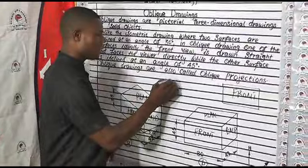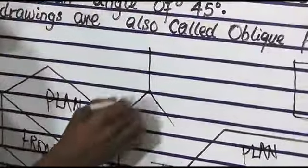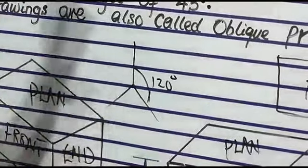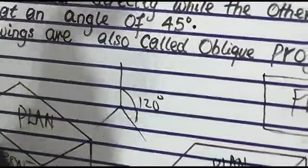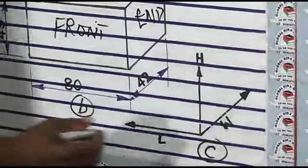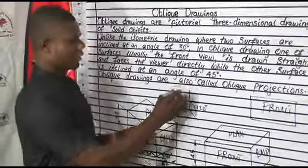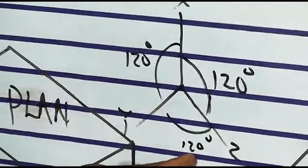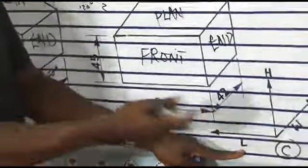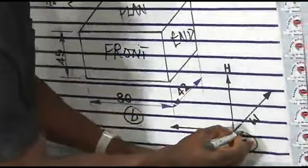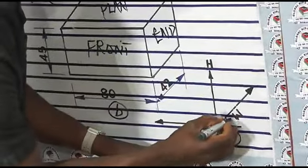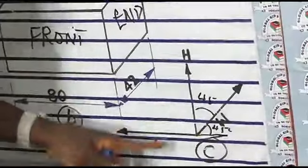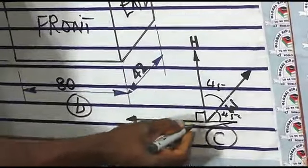In isometric drawing, you have the isometric axis which are equal, and each of the angles is 120 degrees. But in oblique drawing, you have the oblique axis — three axes, let's call them X, Y, and Z — where you have the length, which is horizontal; the width, which is inclined at an angle of 45 degrees; and the height or depth, which is inclined at an angle of 90 degrees.